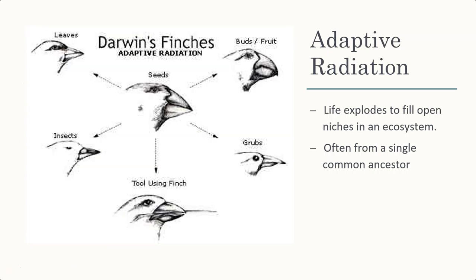When life tends to explode to fill open niches, that's called adaptive radiation — one single common ancestor has a lot of variation, and it becomes beneficial to fill those niches. For example, we have Darwin's finches. The original finch eats leaves, but each variation with different beak shapes allows them to access different food sources — some eat leaves, some eat buds and fruits, some eat grubs, some even use tools, and some eat insects. Because their beak sizes changed, they were more successful eating insects where there was no competition. Over time, their population took hold, they became unique, and they evolved into a separate species — all because there was an open niche and they happened to mutate into it.